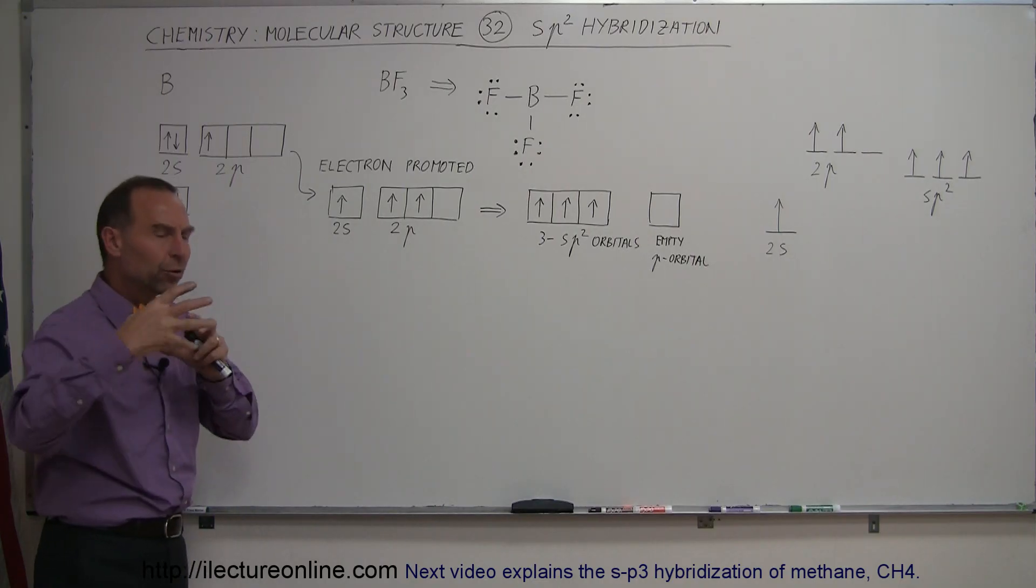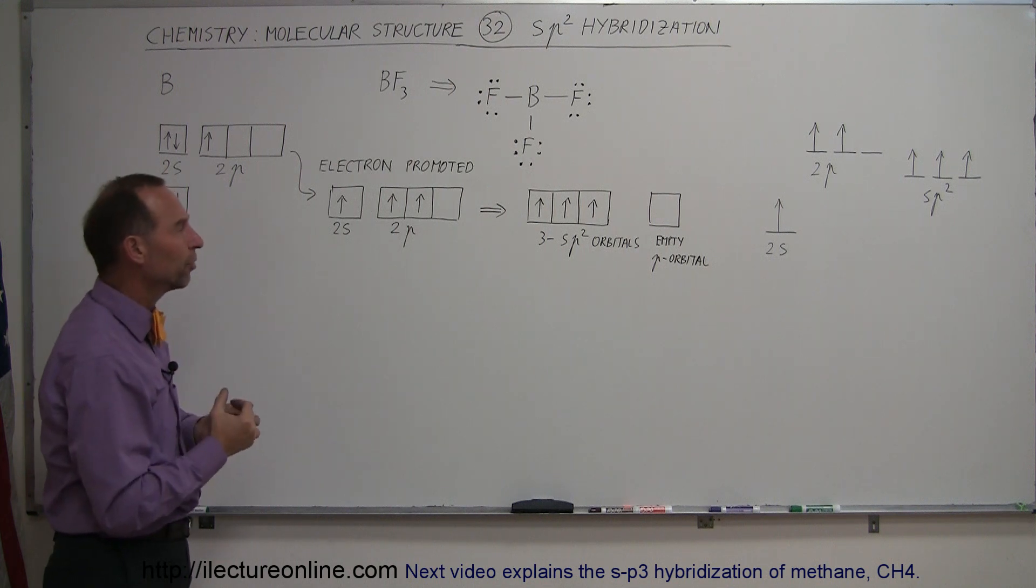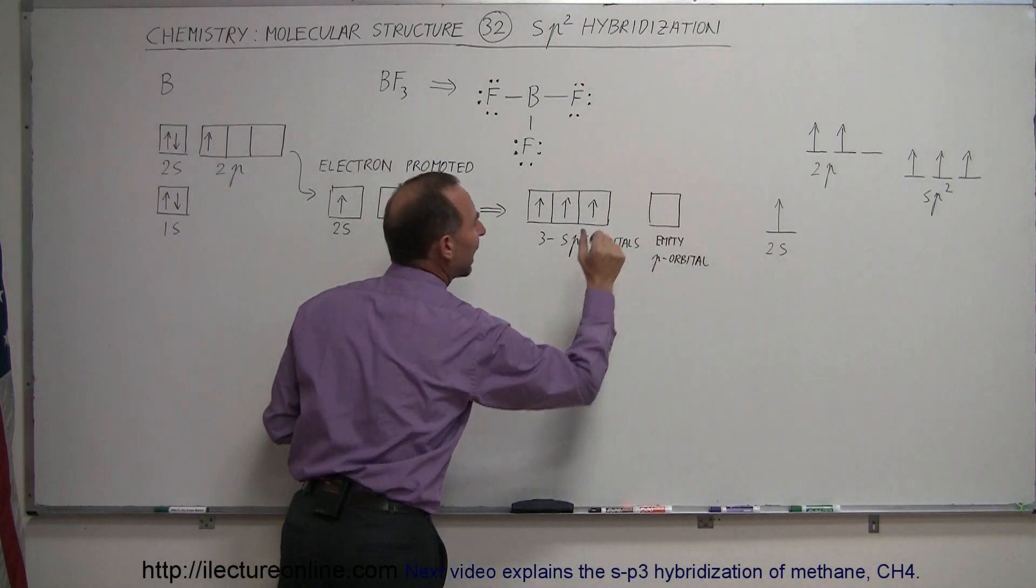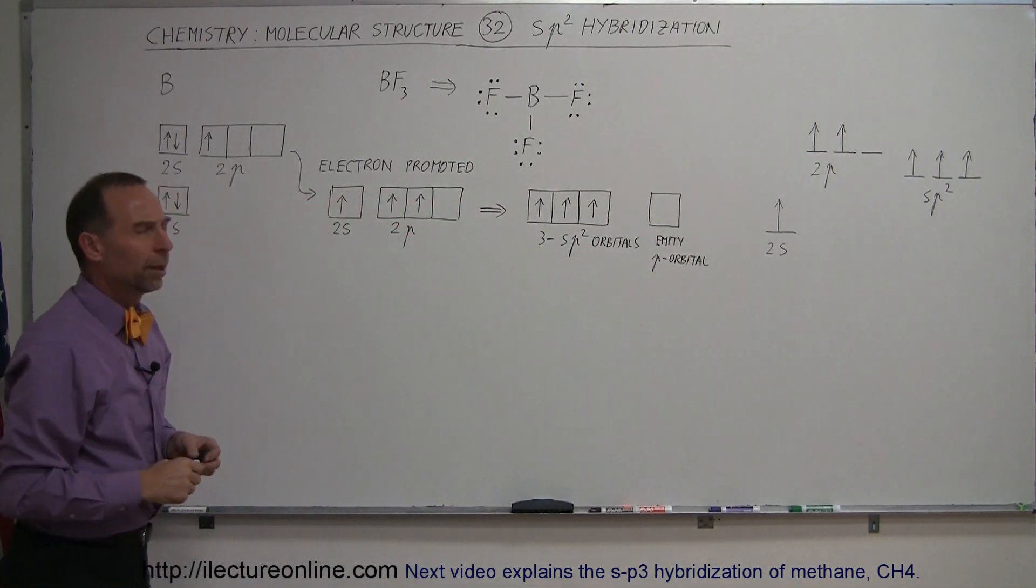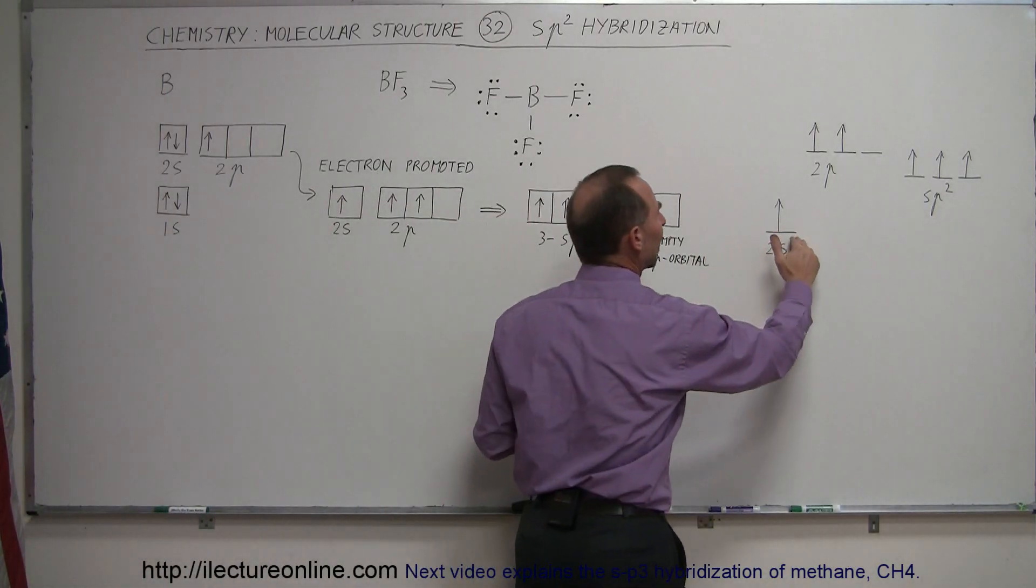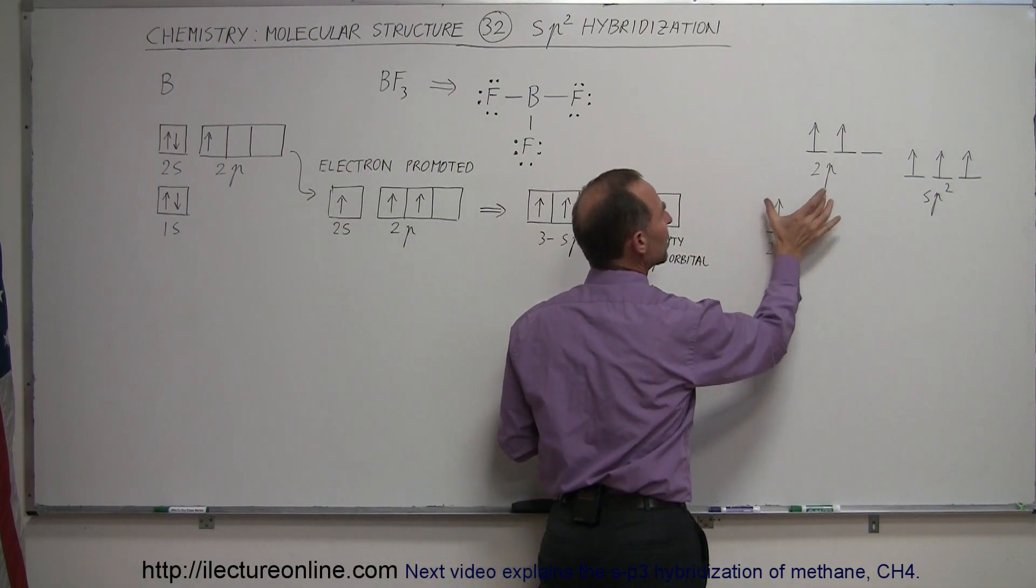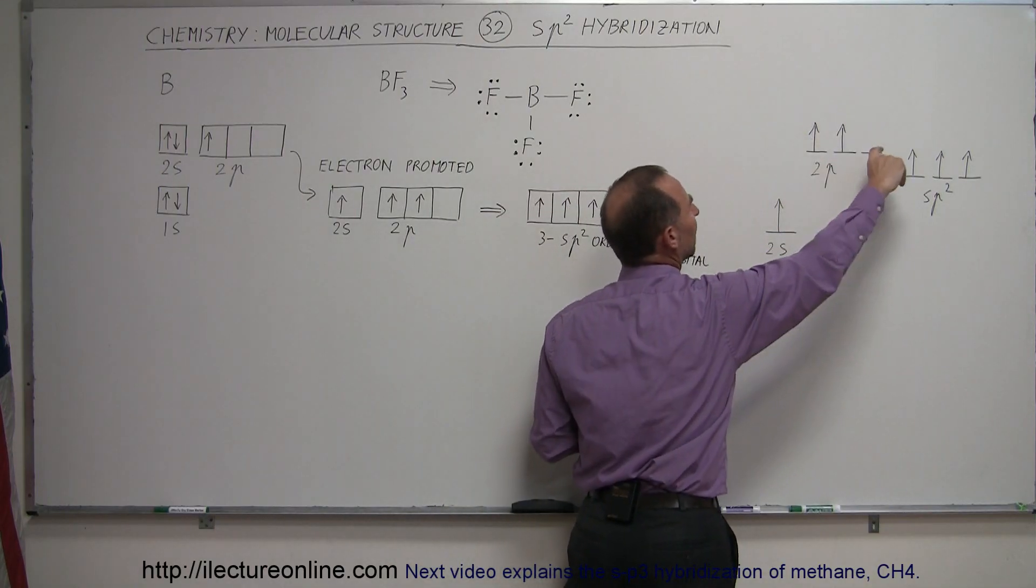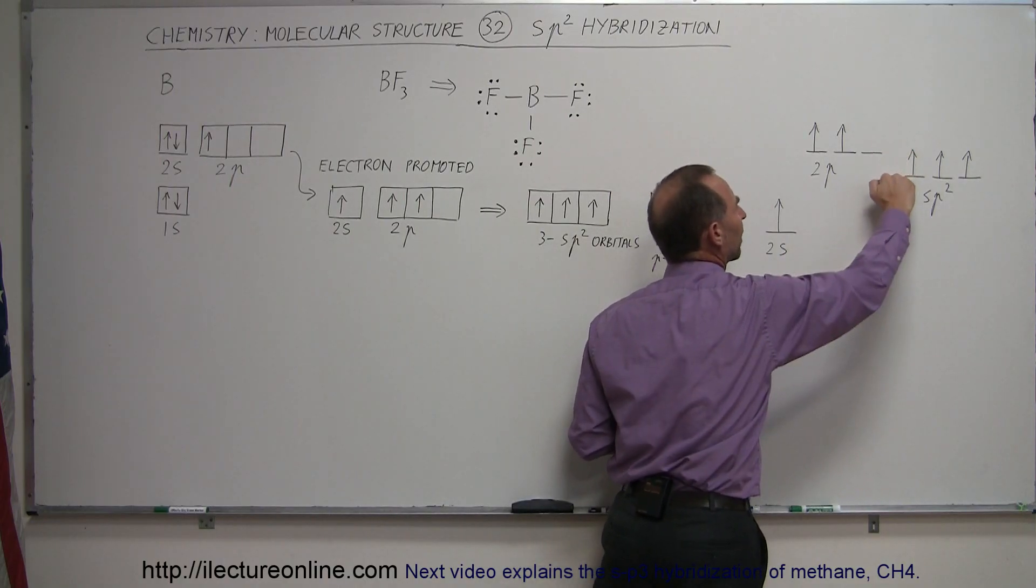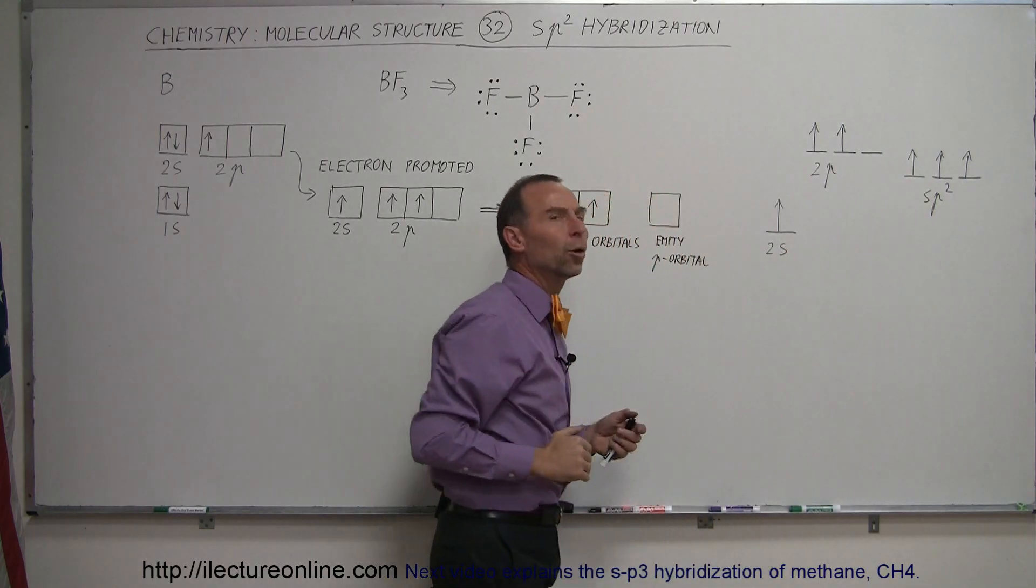So what happens is, the S orbital and the 2p orbitals come together. They re-morph into what we call sp2 orbitals. There's three of them, and so we end up with three sp2 orbitals and one empty p orbital. The sp2 orbitals, they're at a higher energy state than the S orbitals and at a lower energy state than the 2p orbitals. And since one electron comes from here and two electrons come from there, it's about one-third the distance in energy from there to the S orbital, so it goes down like this, and two-thirds the distance from there to there. So they're at a somewhat lower energy state.